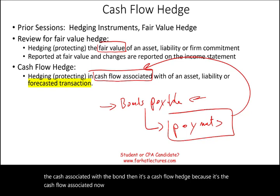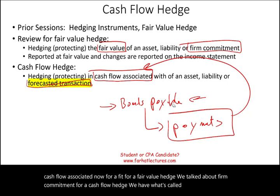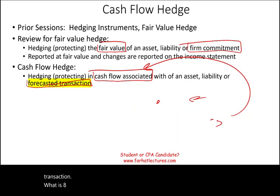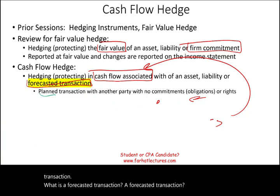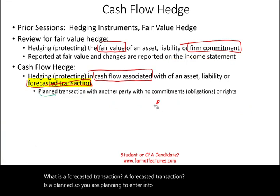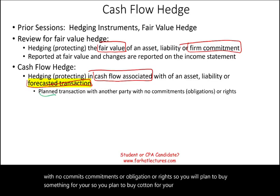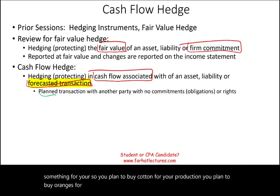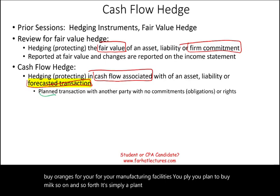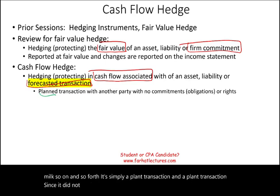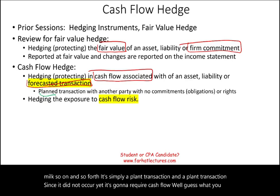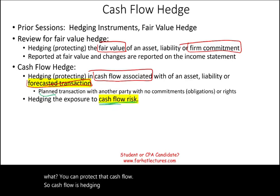For a cash flow hedge, we have what's called a forecasted transaction. A forecasted transaction is a planned transaction — you plan to enter into a transaction with another party with no commitments, obligations, or rights yet. For example, you plan to buy cotton, oranges, or milk for your production facilities. Since the transaction has not occurred yet, it will require future cash flow, and you can protect that cash flow.